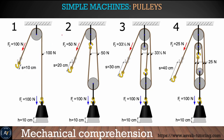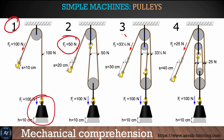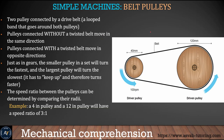The mechanical advantage of different pulley types: a single pulley has mechanical advantage of 1 — you need 100 pounds of force to lift a 100-pound load. Two pulleys: you need 50 pounds. Three pulleys: 33 and one-third pounds. Four pulleys: only 25 pounds to lift that 100-newton object. That's how a pulley system makes lifting easier.